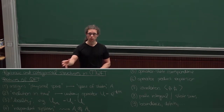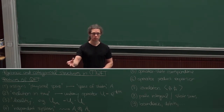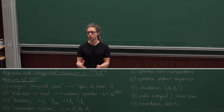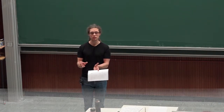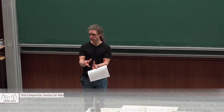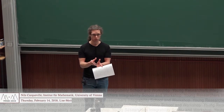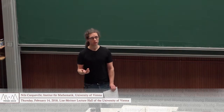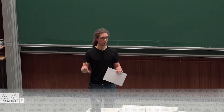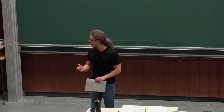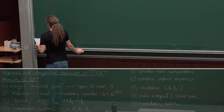In a category, you can compose morphisms, but there's no notion of composing objects. However, with vector spaces, for example, you can compose vector spaces in the sense that you can tensor them together. That's a very important operation, and the next definition of a monoidal category gives us a way to also compose or multiply objects in a category, and not only morphisms.